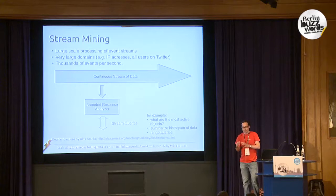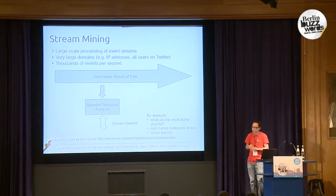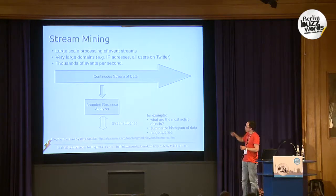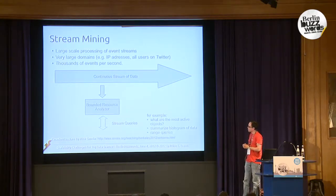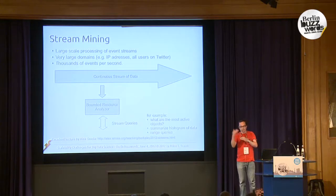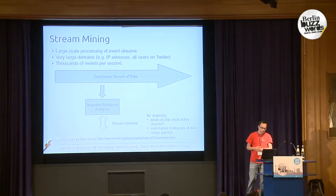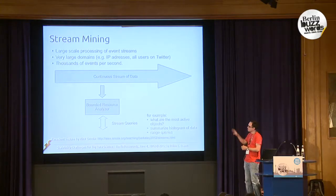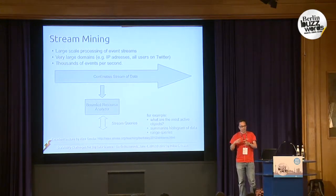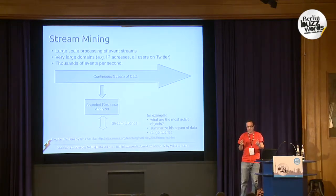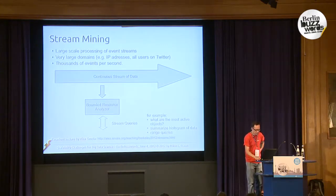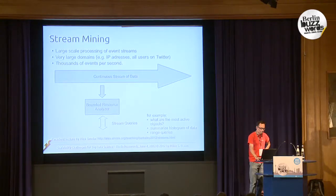You have an analyzer that must have bounded resources — it can't just collect all this data, but really has to run within a certain amount of memory, disk space, and CPU time. There are special stream queries, for example: what are the most active objects? You want to summarize a histogram of the data — like which users are most active, but just the most active ones. This kind of setup is exactly done for real time.